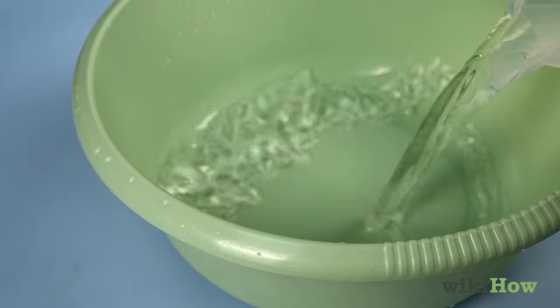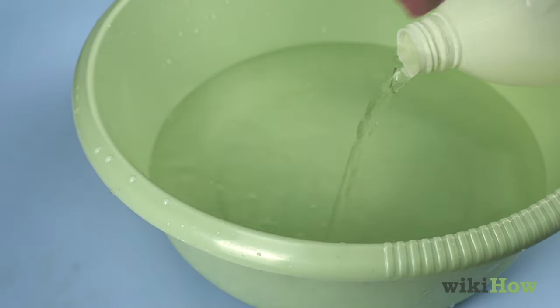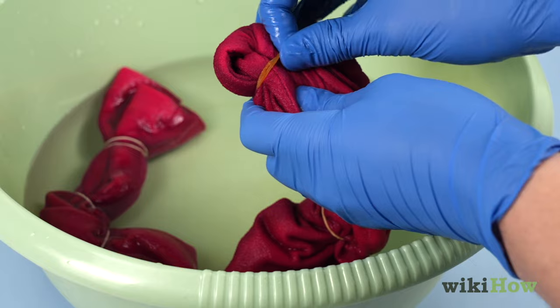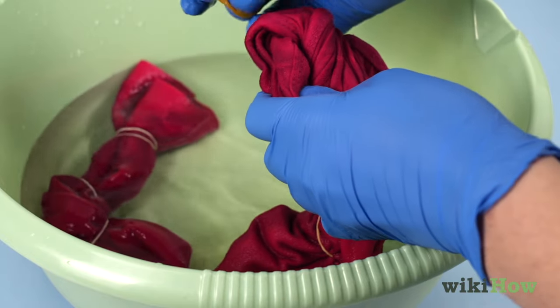Mix a 50-50 bleach and water solution in a bucket. Dunk the shirt in the solution, remove the rubber bands, and hang the shirt up to dry.